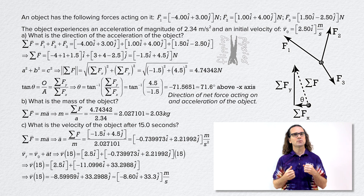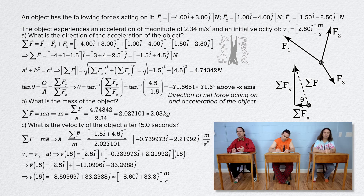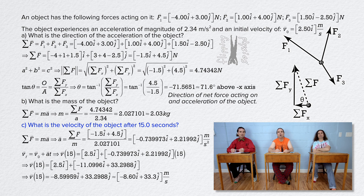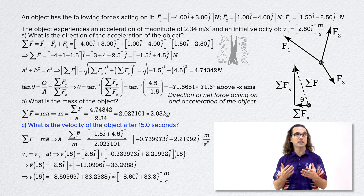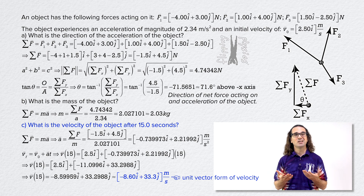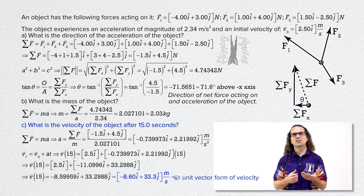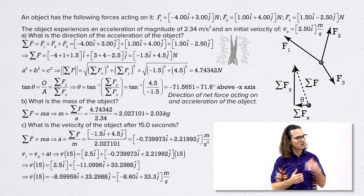Mr. P? Yes, Billy? Part C asks for the velocity of the object — don't we have to determine the magnitude and direction using the Pythagorean theorem and SOH-CAH-TOA? Good question, Billy. No, we do not need to. The velocity we have determined is in its unit vector form, which is an equally valid way to describe the velocity of the object. We certainly could determine the magnitude and direction, but the question does not ask us to.